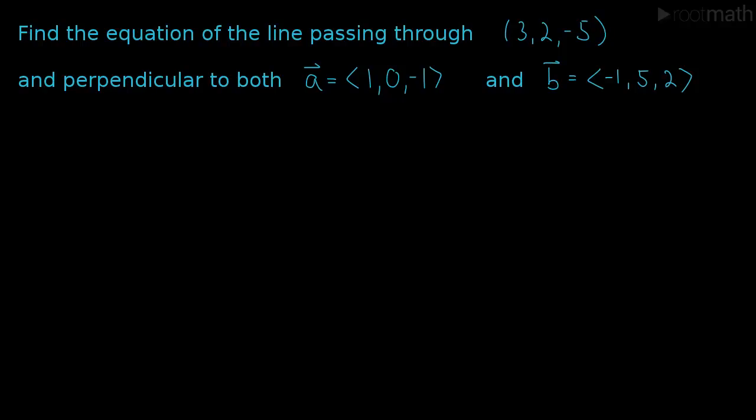We're being asked to find the equation of a line that passes through a certain point (3, 2, -5), and we're told it's perpendicular to both vector A (1, 0, -1) and vector B (-1, 5, 2).